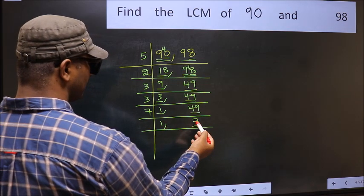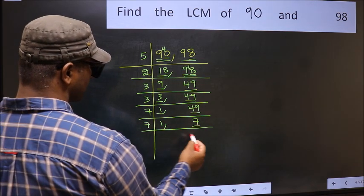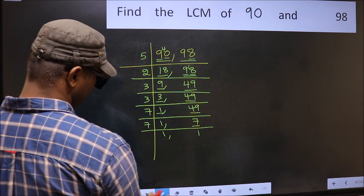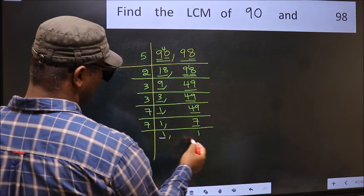Now we have 7. 7 is a prime number, so 7 once 7. So we got 1 in both places.